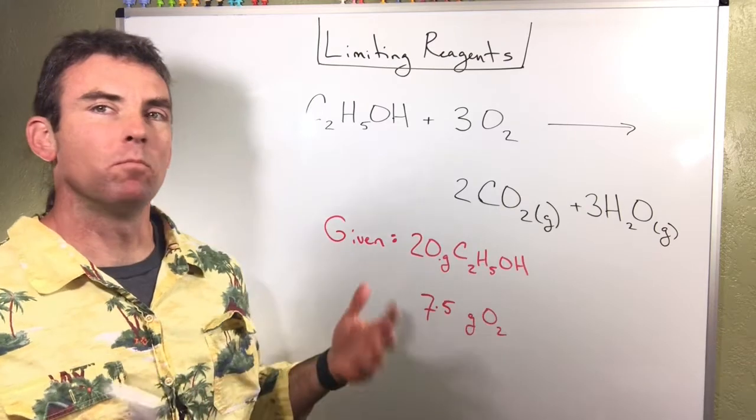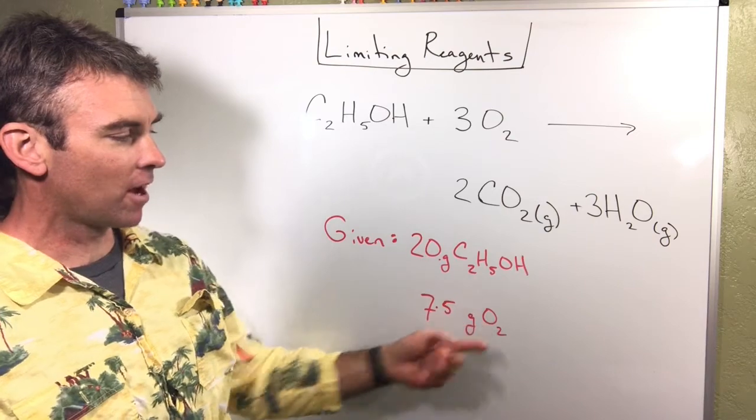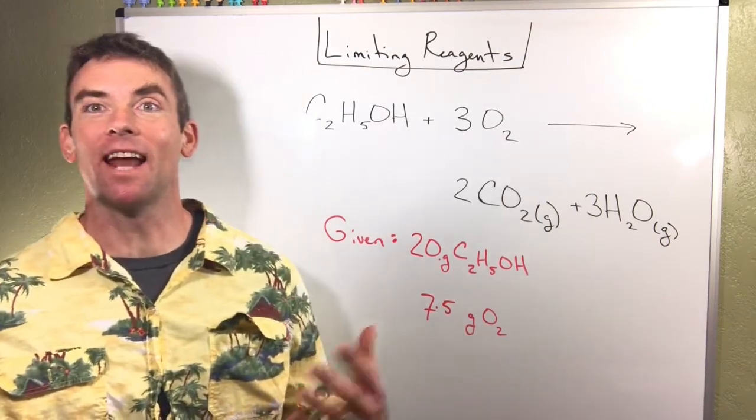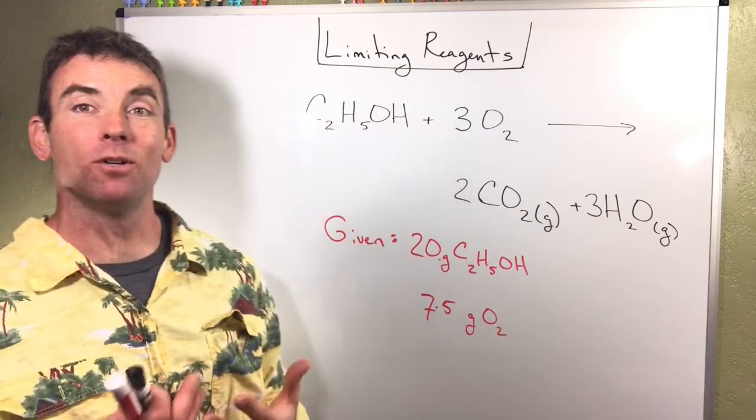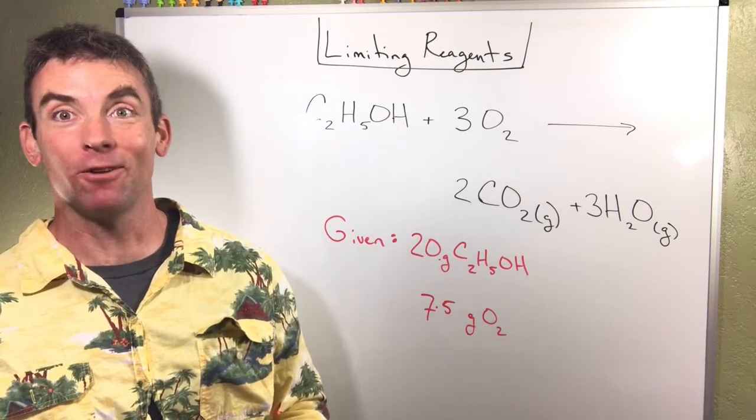Here are some numbers I made up. Let's say we have 20 grams of this and 7.5 grams of oxygen. We need to know which one is present in excess. Because this 1 to 3 ratio is in terms of moles, the first step is converting everything to moles.